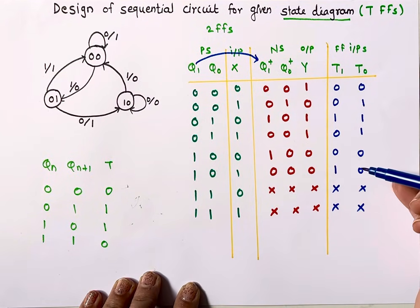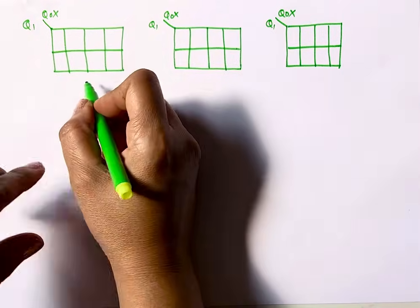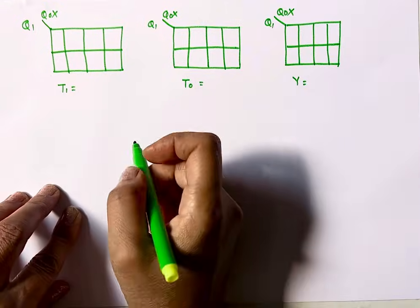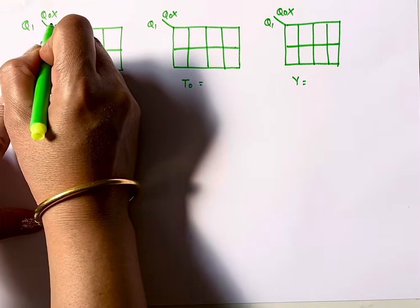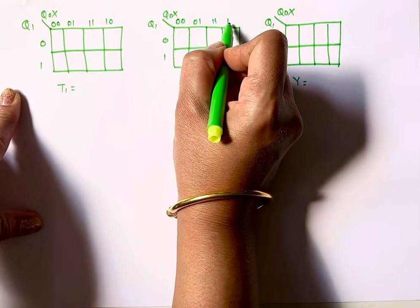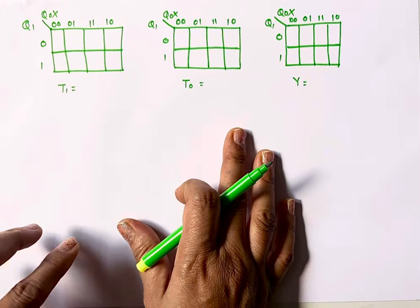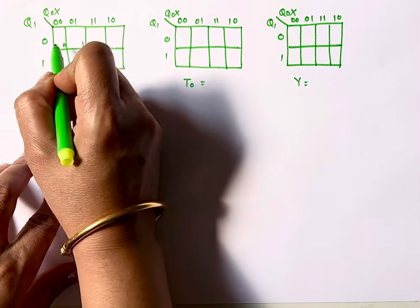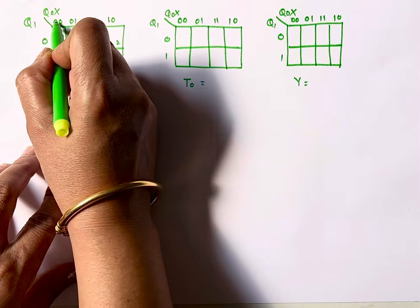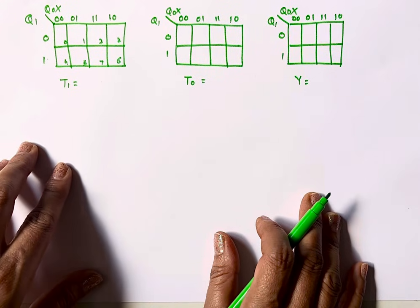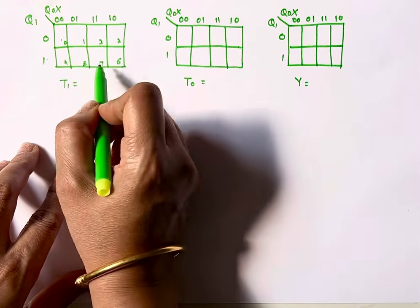Now let's put these values into K-maps and find the equations. I have three K-maps: for T1, T0, and output Y. In K-maps we use Grey code, so the column order is 00, 01, 11, 10. The cell numbering follows: 000=0, 001=1, 011=3, 010=2, 100=4, 101=5, 111=7, 110=6. So whenever we put values in the K-map the sequence is 0, 1, 2, 3, 4, 5, 6, 7.